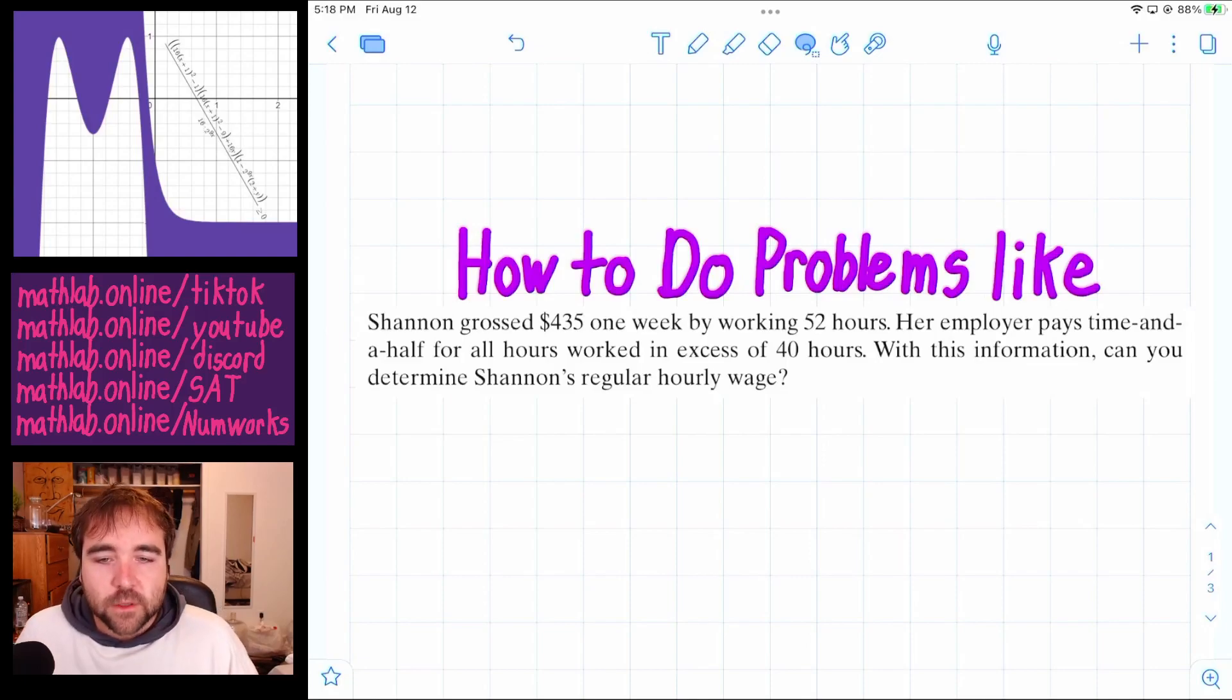All right. Let's take a second to read this problem. Shannon grossed $435 one week by working 52 hours.